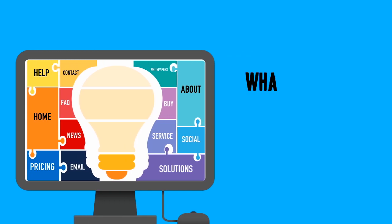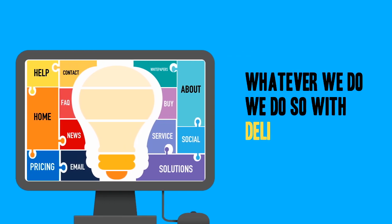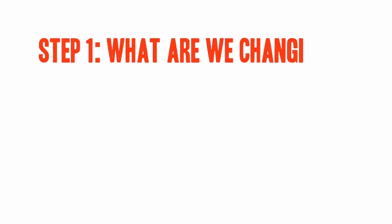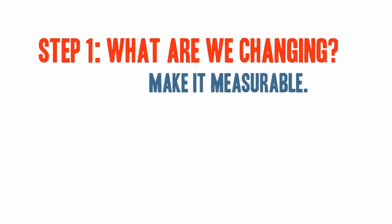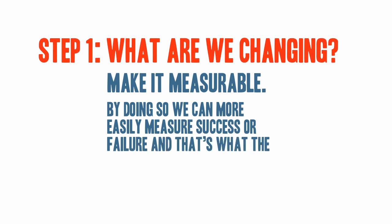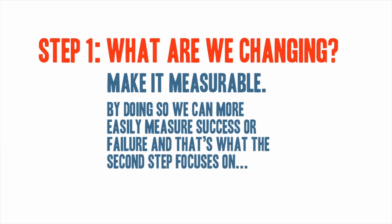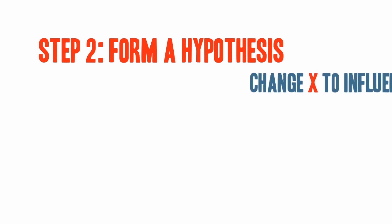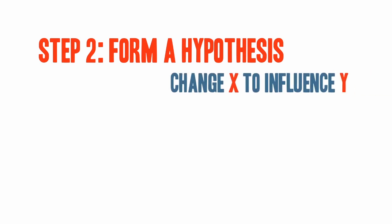It is this fact that influences Rabin's persistence within the book that whatever we do, we do so with deliberate measurement. First, we identify what we intend to change. The rule for success here is to make it measurable. By doing so, we can more easily measure success or failure. Like any good statistician, we need to form and evaluate a hypothesis.